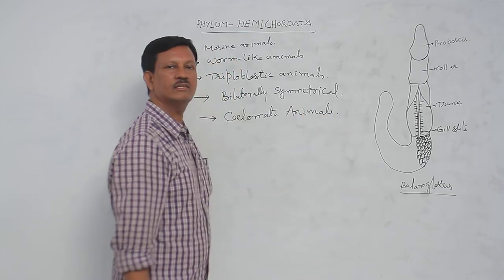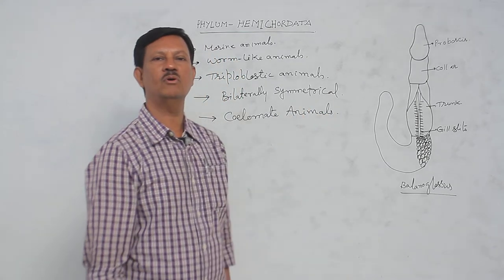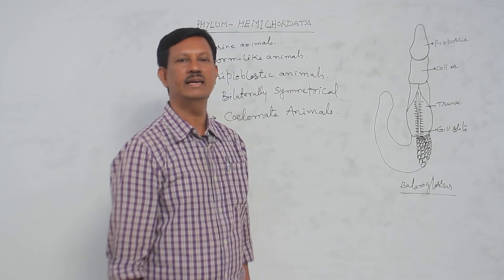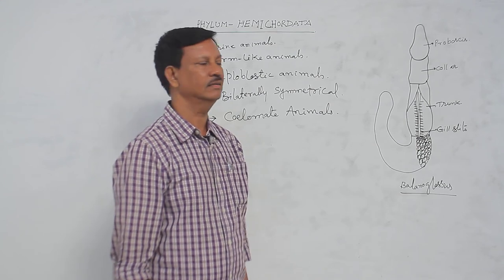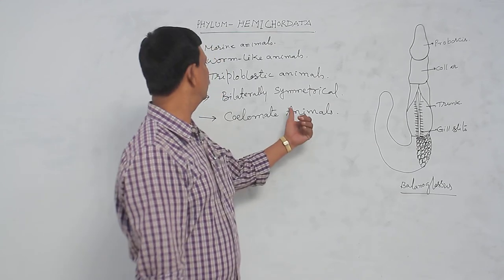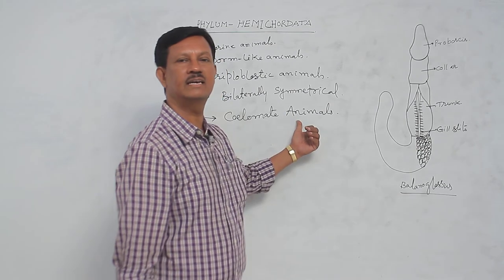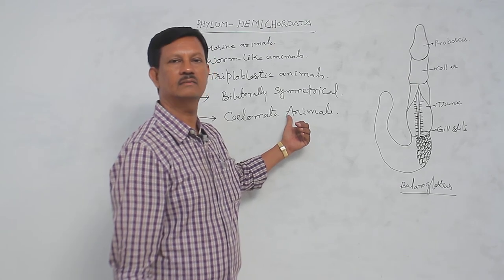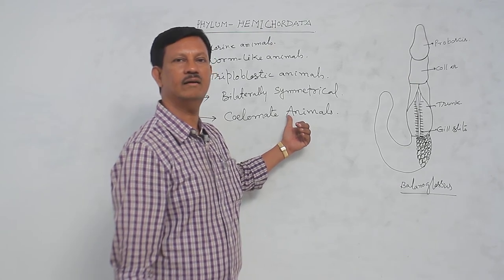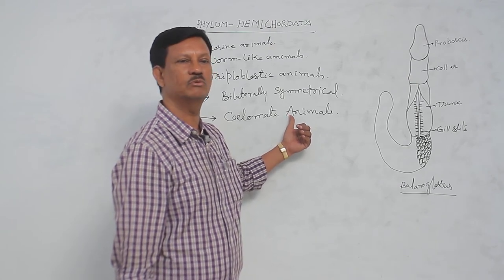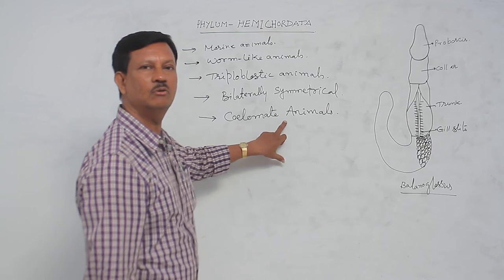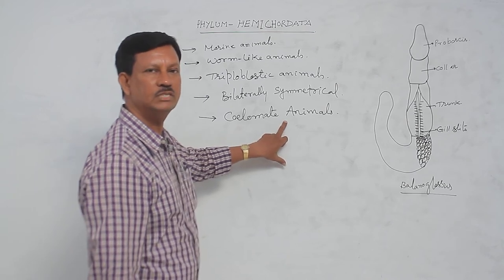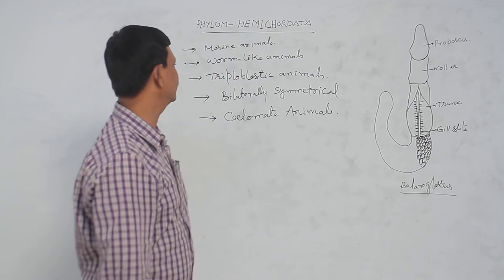Coelom is the presence of a body cavity in between the body wall and the alimentary canal. This body cavity is derived from the alimentary canal, hence it is known as enterocoelic coelom — the presence of a true coelom in the hemichordates.